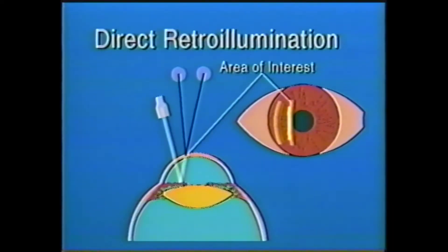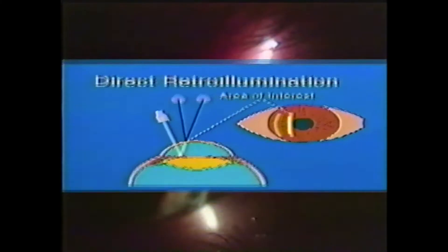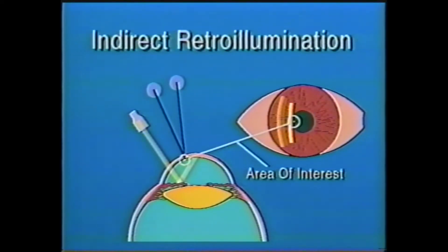Four, retro illumination produces two types of illumination. First, direct retro illumination, which reveals details in the reflected light, such as this small corneal endothelium. And secondly, indirect retro illumination, which reveals the details just off the path of the reflected light, as shown by this Krueckenberg pigment spindle on the corneal endothelium.